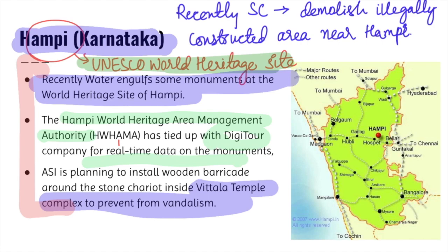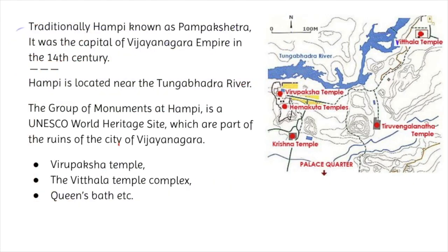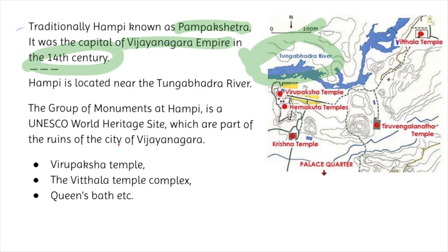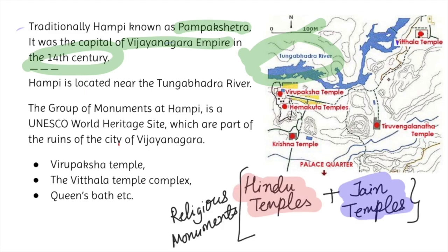Hampi is a very important historical site. Traditionally it was known as Pampa Kshetra. It was the capital of the powerful Vijayanagara Empire of south India during the 14th century, and is located near the Tungabhadra river. One of its most important features is that it is a multi-religious site — apart from Hindu temples, Jaina temple structures are also found here.